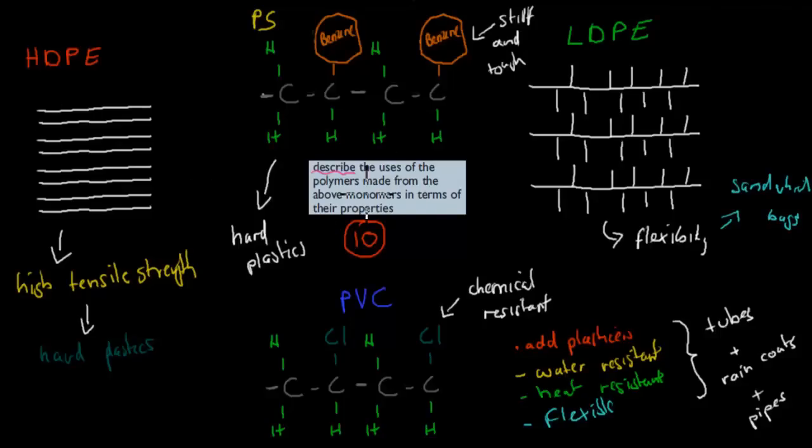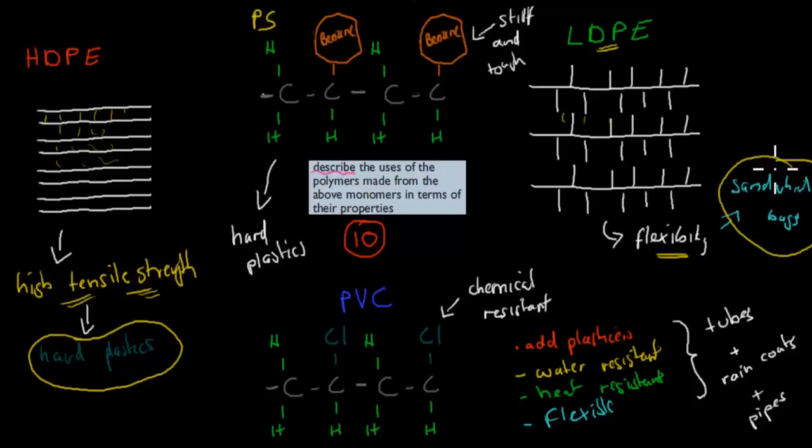Last is to describe the uses of polymers made from the above monomers in terms of their properties. For example, high-density polyethylene, we said it was a linear molecule, which means it has these strong bonds in between all of the actual chains. That gives it high tensile strength, and that is why it's used for hard plastics. We have low-density polyethylene. It had all of these branches, which means we can't stack them so well. They can't have these strong bonds, because it's not one after the other. That makes it less strong, but more flexible. That's why it's used in sandwich bags, for example, the ones which have to be quite flexible.